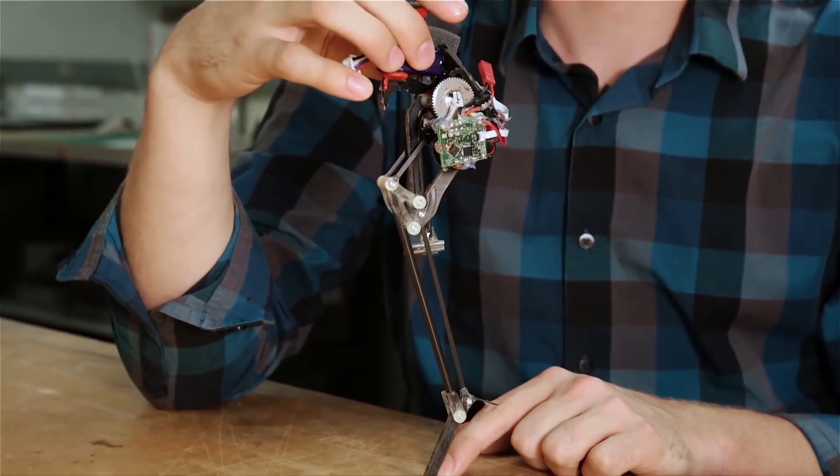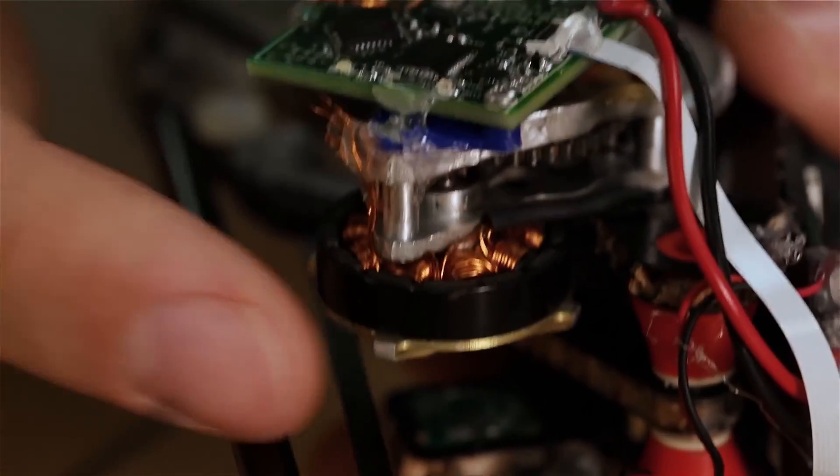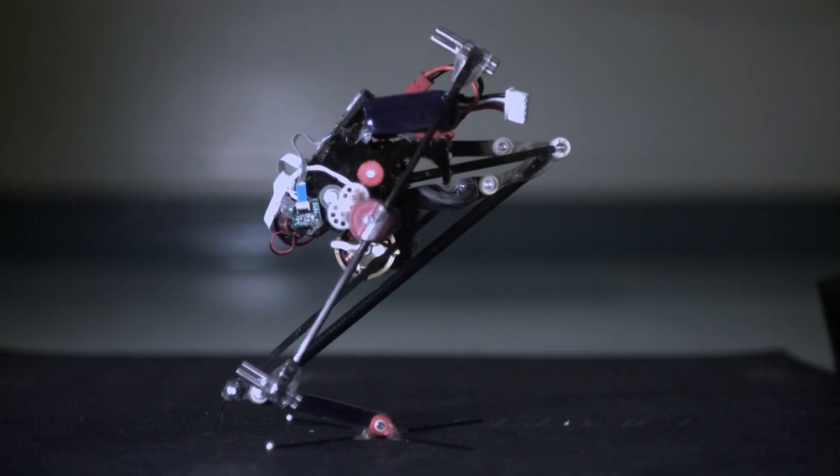So we built into Saltatorial the capability for a super crouch. What that allows is to have the motor be able to stretch out the spring and keep the robot crouched for longer.